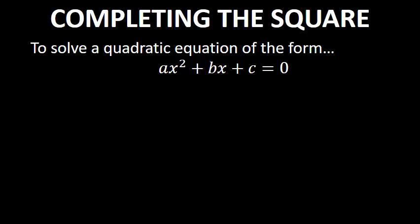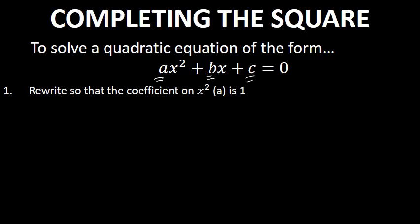We'll also look at a practice problem you can solve on your own. To solve a quadratic equation of the form ax squared plus bx plus c equals zero, where a is the coefficient on x squared, b is the coefficient in front of x, and c is the constant, you first have to rewrite it so the coefficient in front of x squared is one. That involves dividing every term in the equation by a, on both sides.